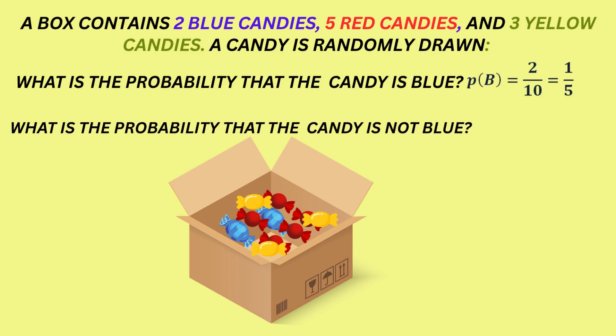What is the probability of B complement? B complement is the event that the candy is not blue. This means it could be red or yellow. That's 8 possibilities from a total of 10 candies. So, the probability of B complement is 8 tenths, or 4 fifths, when simplified.